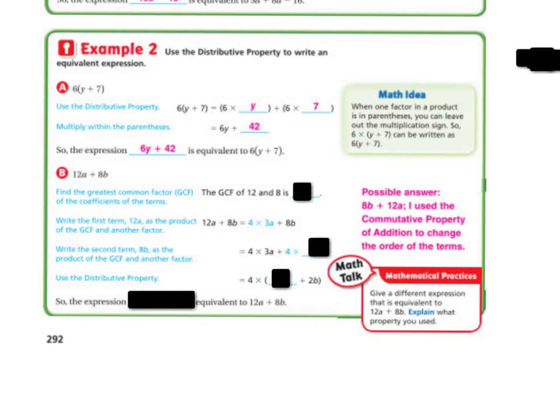Now with 12a plus 8b, we find the greatest common factor of 12 and 8, which is 4. We write 12a as 4 times 3a, and 8b as 4 times 2b. Then using the distributive property in reverse, we factor out the 4 to get 4 times (3a plus 2b).